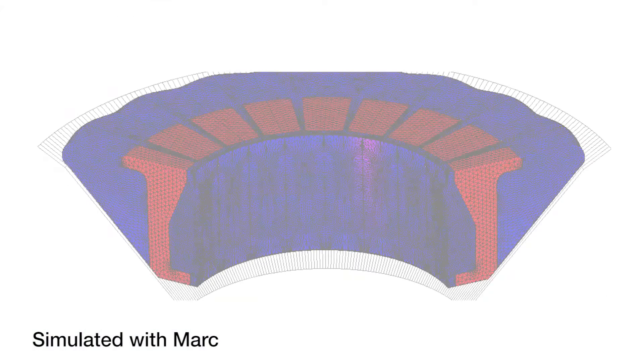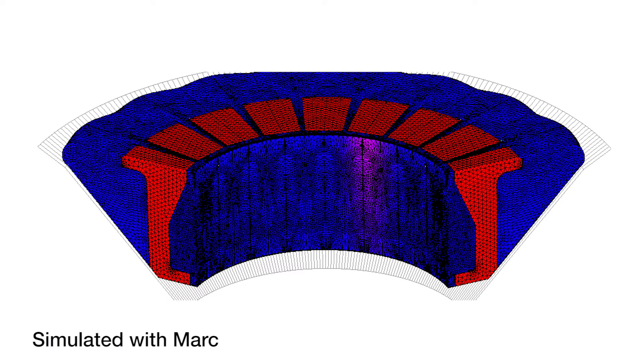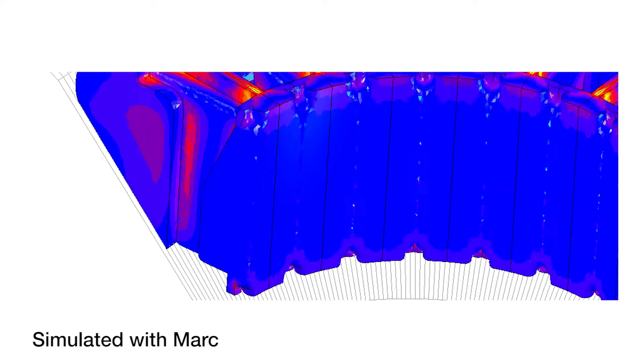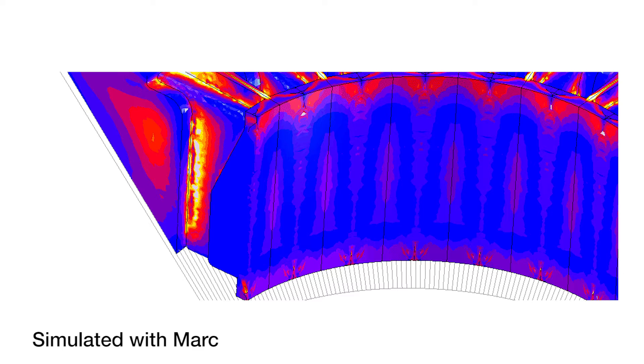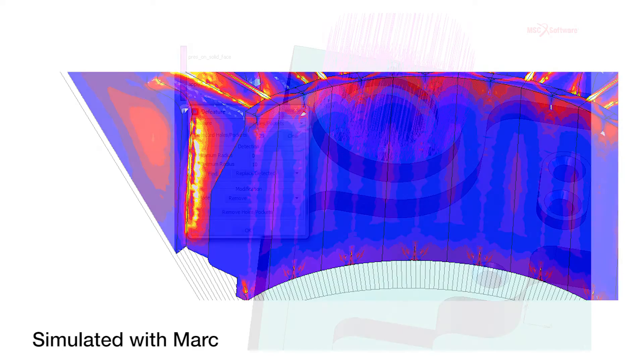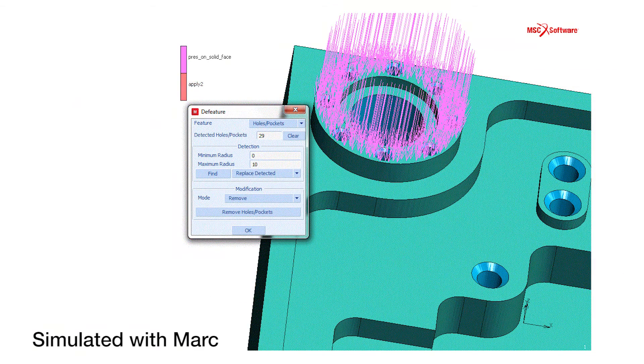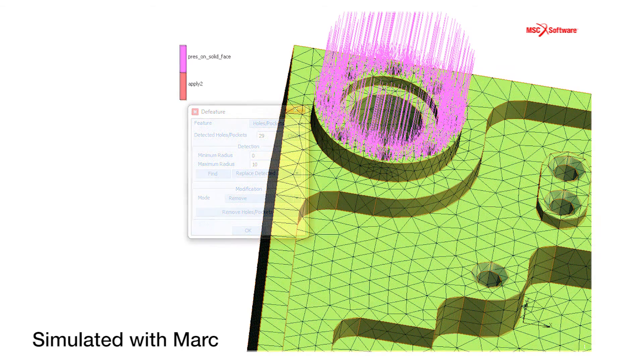The next big feature of MARC that makes it such a powerful product is global adaptive meshing. With global adaptive meshing, we can overcome some of the deficiencies of finite elements for models where there is large deformation. In such problems, finite elements usually degenerate and the analysis stops. But we can automatically remesh the model such that the analysis continues in an accurate manner.